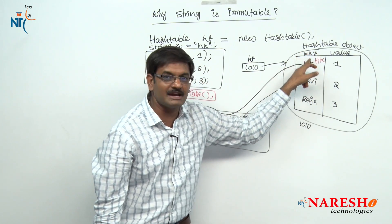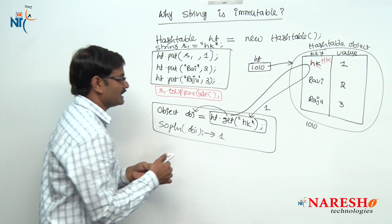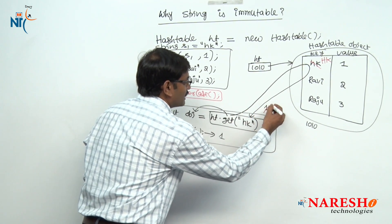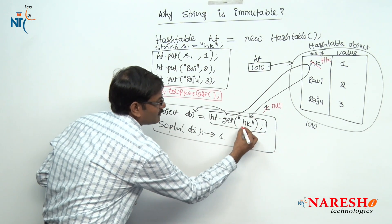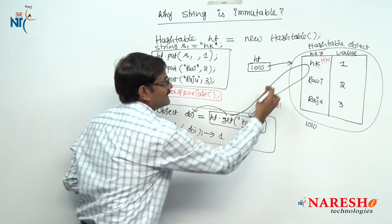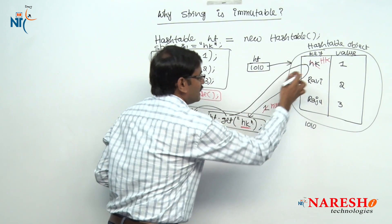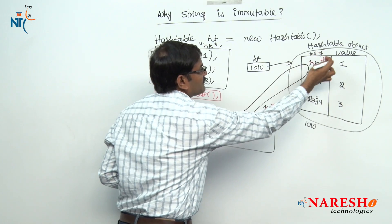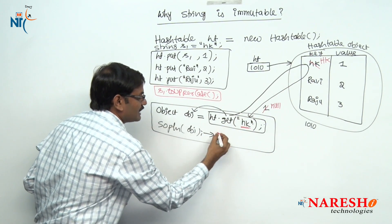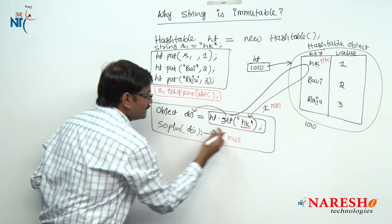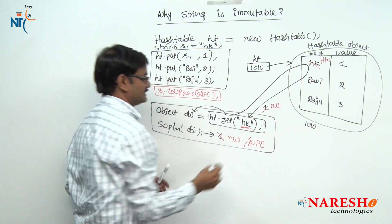If the modification is stored in the same object, think about what happens at retrieval time. What data are you getting — will you get 1, or will you get null? Null. Why? Now you are searching with the key hk, but inside the Map object, the original small hk is not available anymore. So the get method goes inside, verifies that small hk is not available, comes back with null, and finally we get null. If you perform any operation using this null, we will get a NullPointerException.